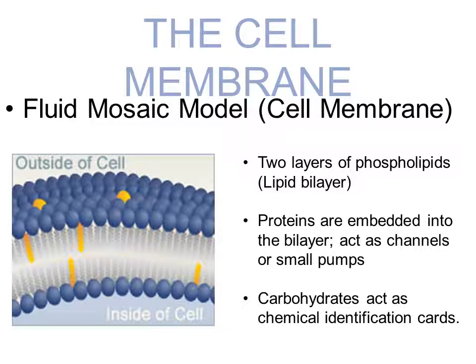We're going to first talk about the cell membrane. You can think of the cell membrane as a fluid mosaic model. There are two layers of phospholipids — the type of macromolecule where you have on one end a polar side and on the other a non-polar side. Within that phospholipid bilayer, you have proteins embedded into the bilayer, and they can act as a channel or a pump through which bigger types of macromolecules can make their way through the membrane.